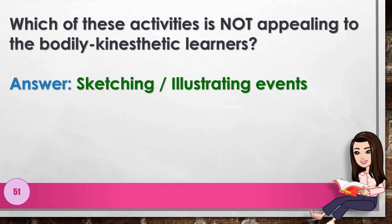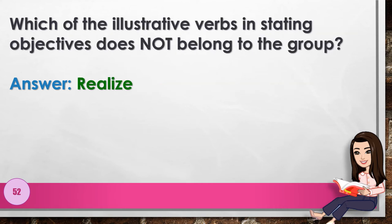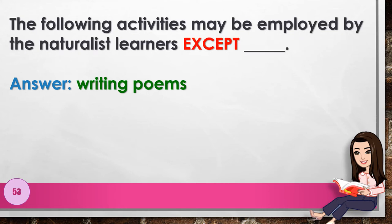Number 51: Which of these activities is not appealing to bodily-kinesthetic learners? Answer: sketching or illustrating events. Number 52: Which of the illustrative verbs in stating objectives does not belong to the group? Answer: realize. Number 53: The following activities may be employed by naturalist learners except blank. Answer: writing poems.